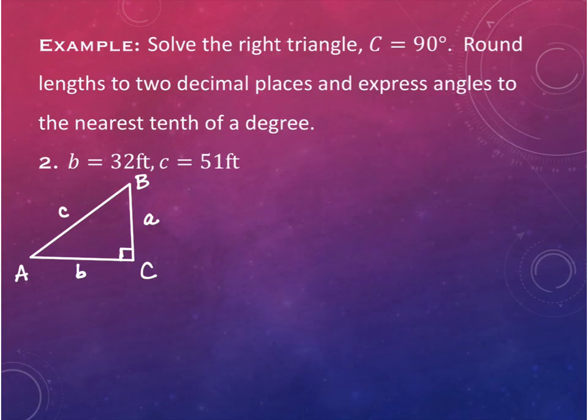They give us two other pieces of information: b equals 32 down here, and c equals 51 up here. With those two pieces of information I can find both angles and the missing side.